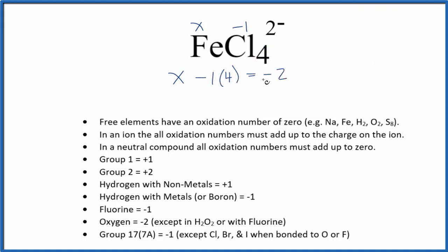And then the whole thing, that's going to equal the charge on the ion. That's that negative 2. So x minus 4 equals negative 2. We add 4 to both sides, we get x is a positive 2. So the oxidation number for Fe in FeCl4 2- is positive 2.